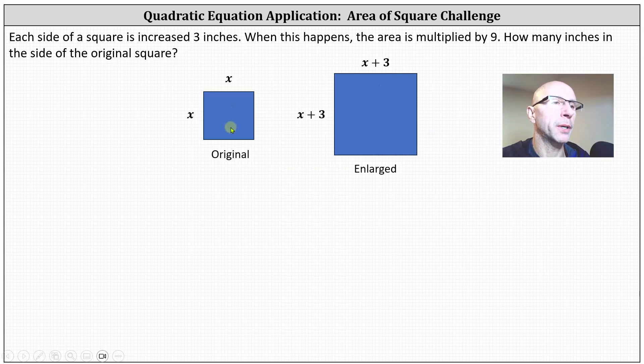And again, when this happens, the area of the larger square is nine times the area of the smaller square. The area of the original square is x times x or x squared. The area of the enlarged square is x plus three times x plus three or the square of x plus three.